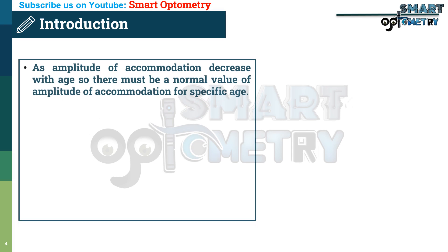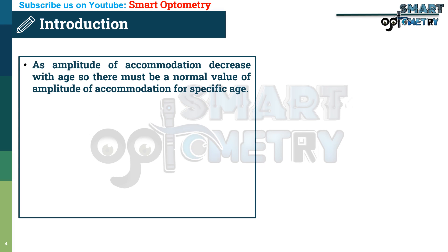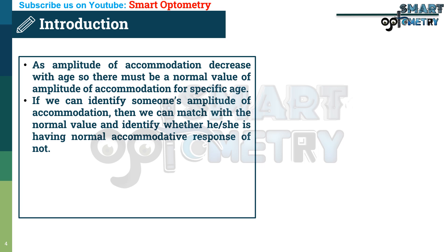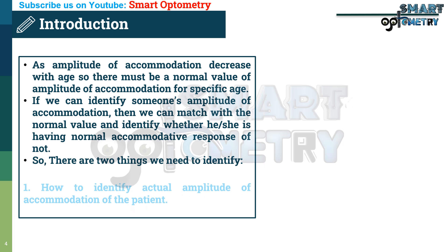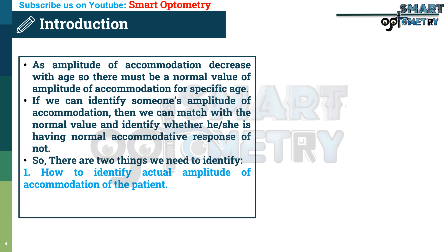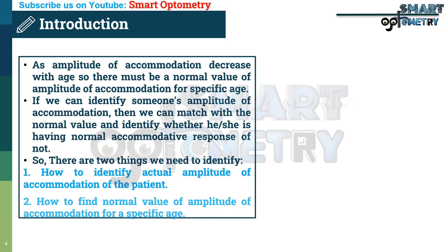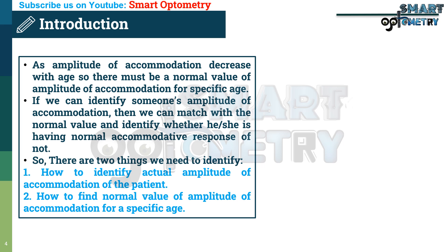As amplitude of accommodation decreases with age, there must be a normal value of amplitude of accommodation for a specific age. If we can identify someone's amplitude of accommodation, we can compare it with the normal value and identify whether they have a normal accommodative response or not. So there are two things we need to identify: one, how to identify the actual amplitude of accommodation of the patient; and two, how to find the normal value of amplitude of accommodation for a specific age.